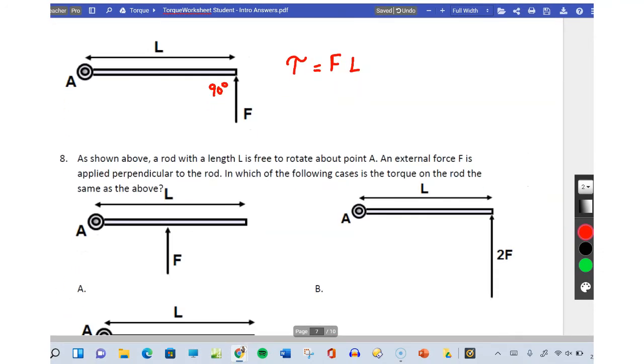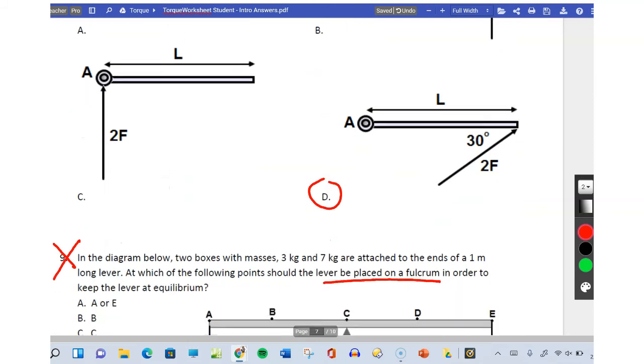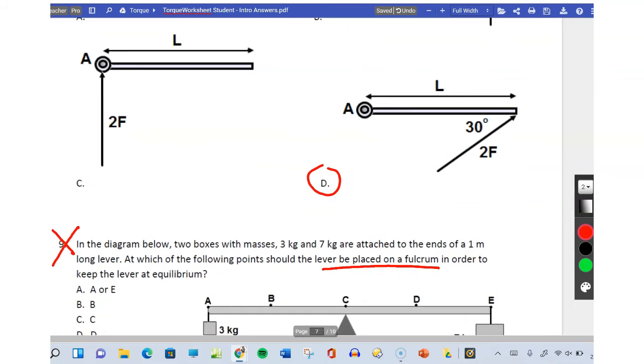We have a force on it at 90 degrees with a moment arm of L, no sine needed, so the torque is F times L. Which one of these below have the same torque? The force is 2F. Now we have to use trig: sine 30 times the moment arm L, the distance between the pivot and where the force is applied. Sine 30 is a half, a half times two is just one, so this torque is also F times L.